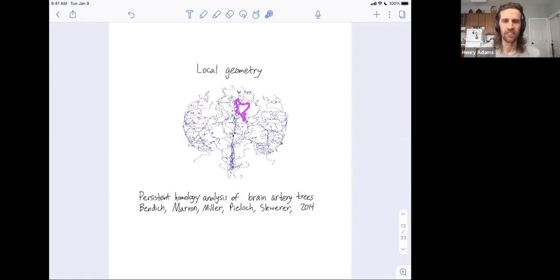Okay, so this here is a picture of the arteries in the human brain. So the scientists were somehow able to extract these data points that are on arteries inside of the brain.